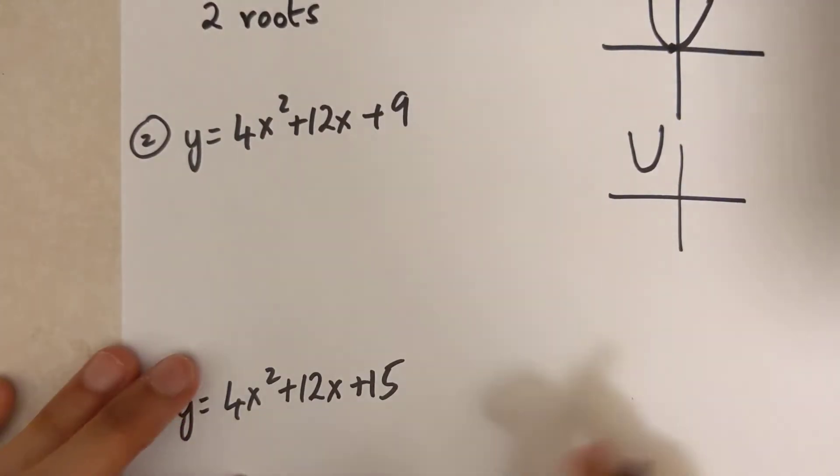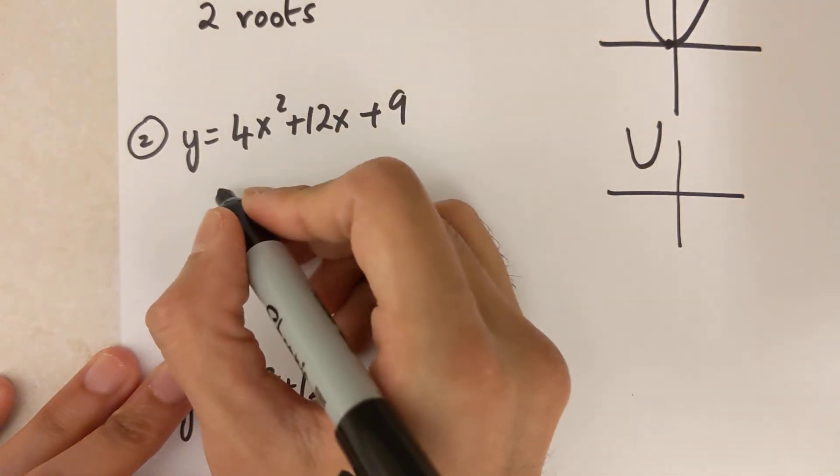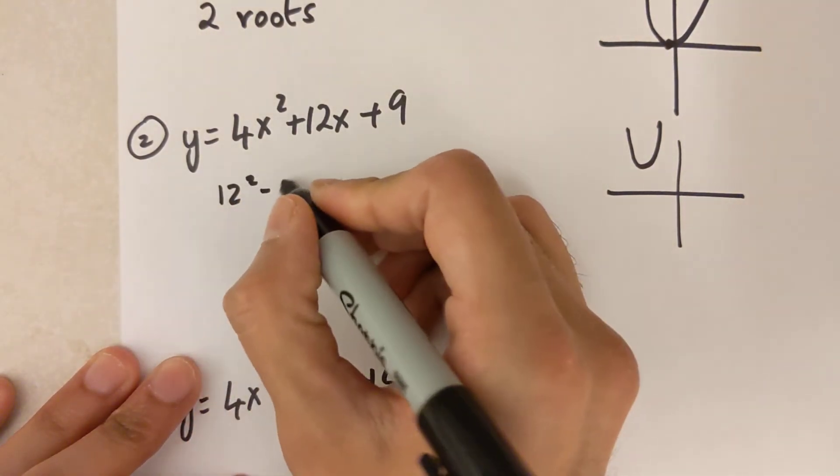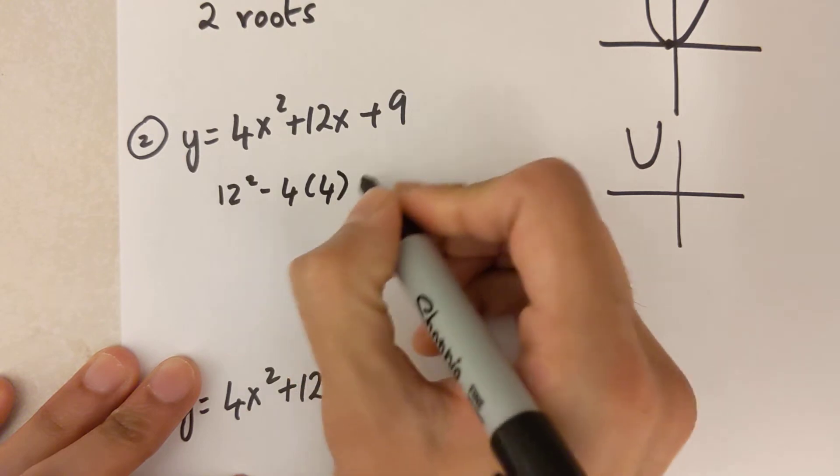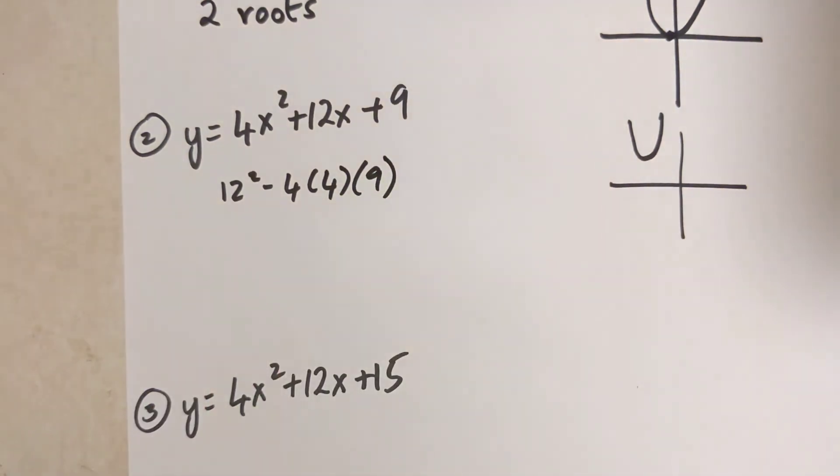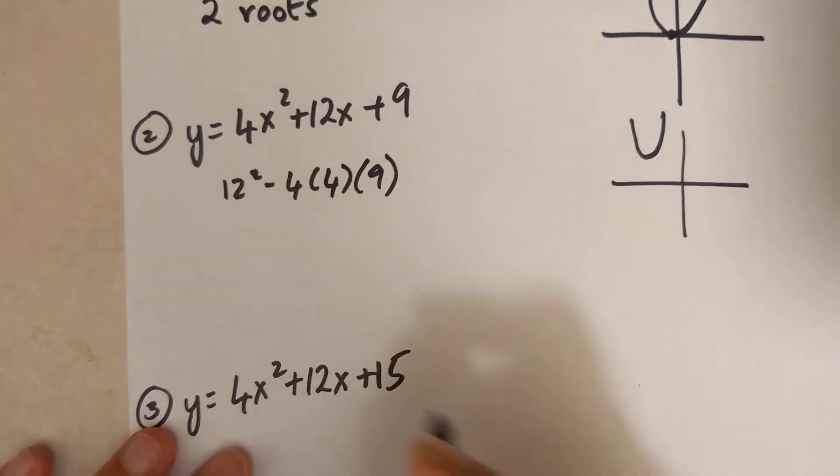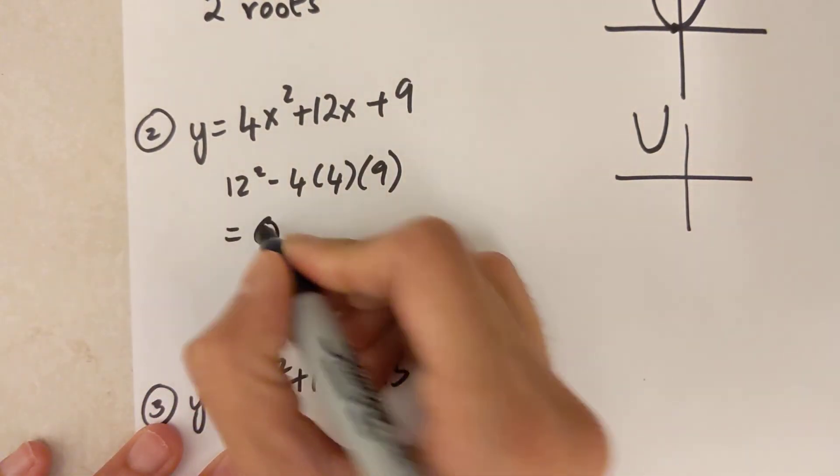Let's try this next one over here. So b² minus 4 times a times c. I'll put that in my calculator, and I get a discriminant of 0.